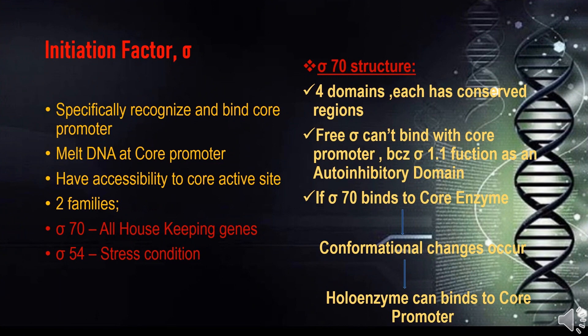The initiation factor sigma is the important component of RNA polymerase. It is the only form that can initiate transcription, as it specifically recognizes and binds the core promoter and can melt DNA at the core promoter. Sigma has two main families: sigma-70 and sigma-54. Sigma-70 factors are involved in the transcription of all housekeeping genes, and sigma-54 is involved in transcription during stress conditions.